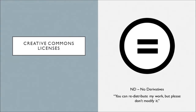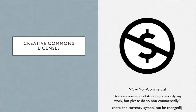ND stands for No Derivatives. This means that work can be redistributed commercially and non-commercially, as long as it is used unchanged and in whole with credit to you. NC stands for Non-Commercial. This allows others to remix, build upon, or tweak your work non-commercially. New works must also acknowledge you and be non-commercial, but they don't have to license their derivative works under the same terms — so they're allowed to change the licensing for new derivatives of your work.